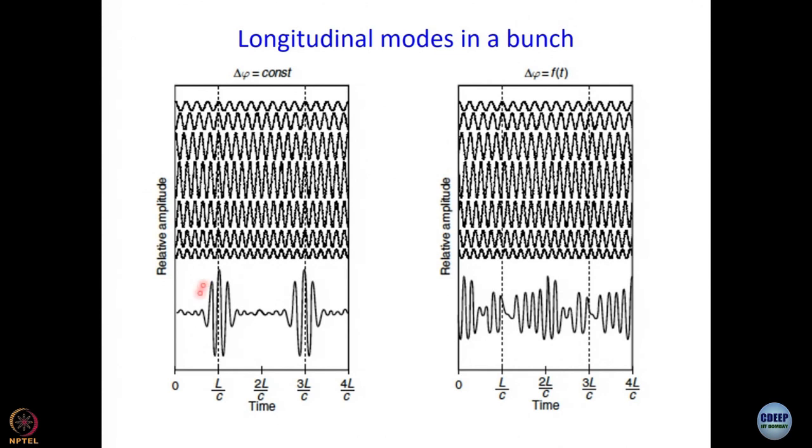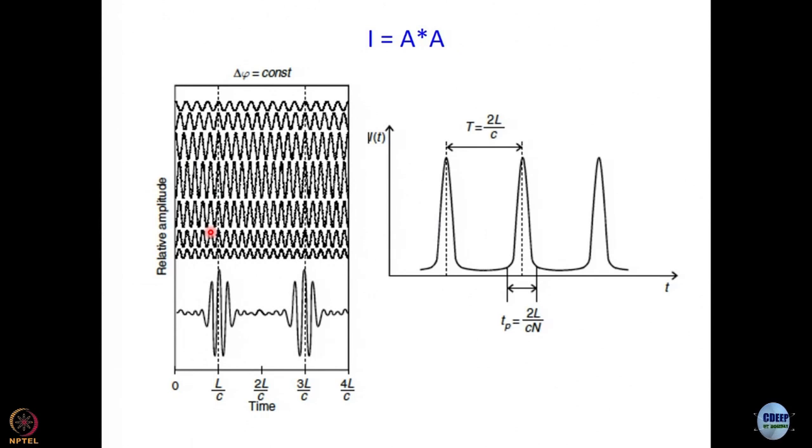Mod square. If I take mod square of something like this, what will I get? Everything will be positive. It will become sharper. We get something like this. And as we are going to see in the next module, we don't exactly get something like this. We get a little more structure in each of the pulses. But the crux of the matter is you get pulsed operation.